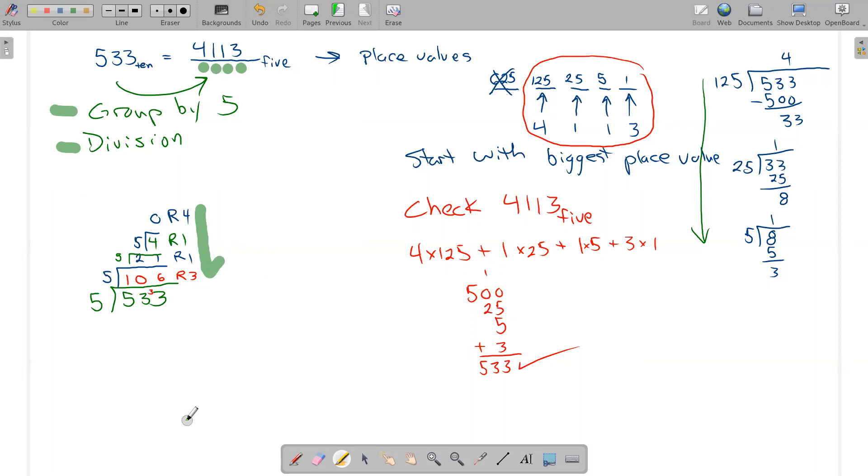If that method, if you don't like it, there's always the method where we name the place values and start giving out the biggest bills first. So we'll do each of those again.